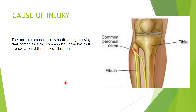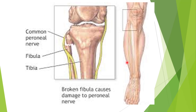The common peroneal nerve can be injured by peripheral neuropathy and many other causes. The most common cause is habitual leg crossing, which compresses the common fibular nerve as it winds around the neck of the fibula — as shown in this diagram. A fracture of the neck of the fibula can also damage the common peroneal nerve.